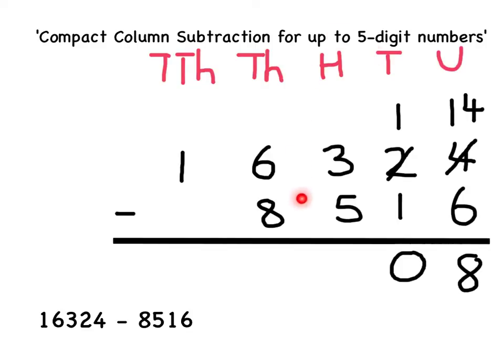Now to the hundreds column. I've got 300 subtract 500. Again I can't do this, so I must partition the thousands to help me. So I'm going to partition the 6,000 into 5,000 and 1,000.